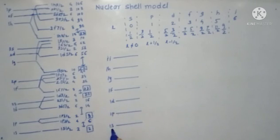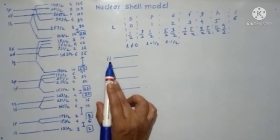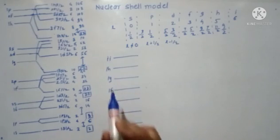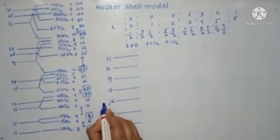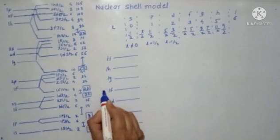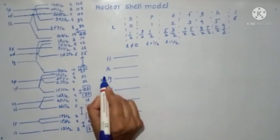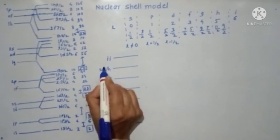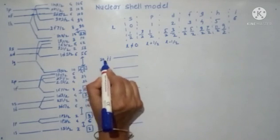So first, write down 1s, 1p, 1d, 1f, 1g, 1h, and 1i. Then, starting from the next principal quantum number, write 2s, 2p, 2d, 2f, 2g, and so on.